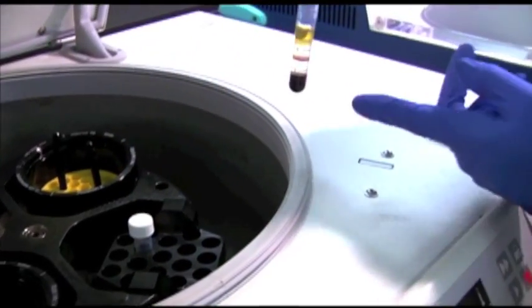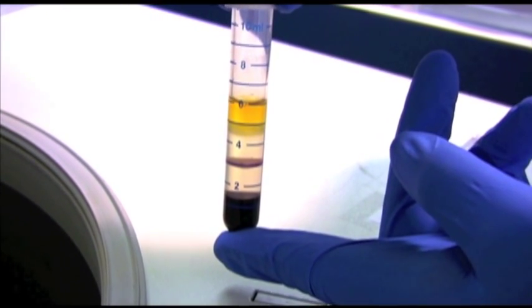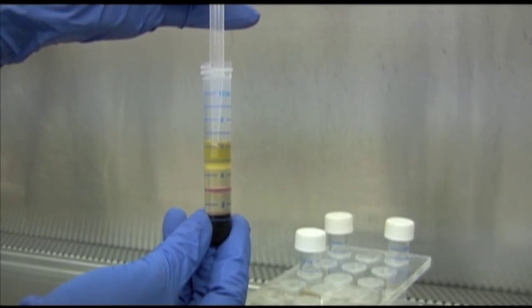After centrifugation, erythrocytes and granulocytes should pellet to the bottom of the AccuSpin tube. Mononuclear cells should band at the interface between the Histopac 1077 and the plasma.